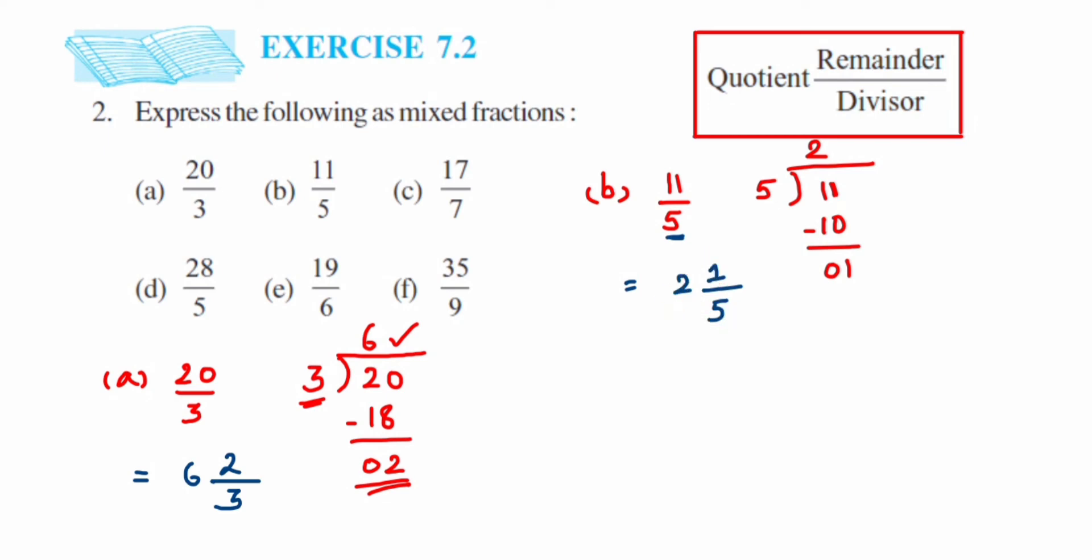Next, we have C, which is 17 upon 7. Divide it. 7 times 2 is 14, so the remainder will be 3. The answer will be: denominator is 7, quotient is 2, and the remainder is 3. So it's 2 and 3/7.